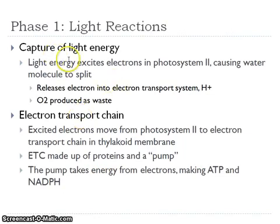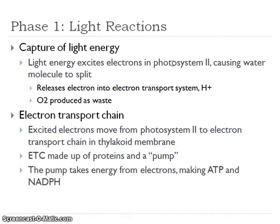In our light reactions, we're capturing all of our energy. We're using this light energy to excite electrons in photosystem 2, causing water molecules to split in half. When we're splitting water molecules, we're getting two different products: we are releasing oxygen, which is a waste product, and we're also getting electrons in the form of hydrogen molecules.